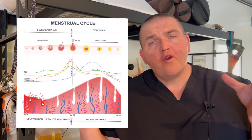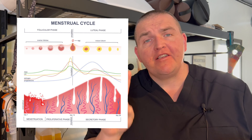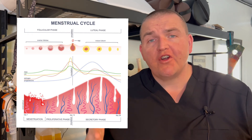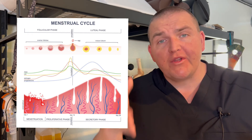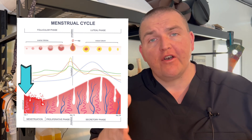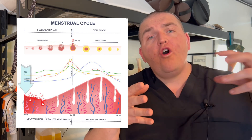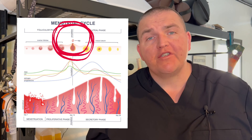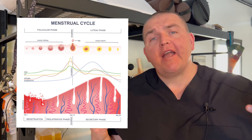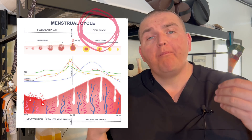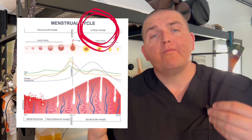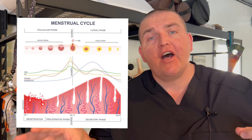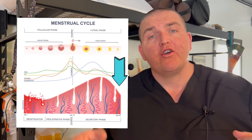If you didn't know, a normal monthly cycle is divided in two. There is the follicular stage, which actually starts on the very first day of bleeding — so when your period first starts — and that stage goes all the way to the point of ovulation, which is usually around day 14. After that, all of the body processes move into a support role in preparation for fertilization, or to flush that egg cell out of the body when this whole cycle repeats.